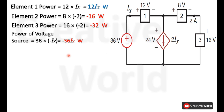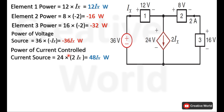Proceed towards the last element, which is the current controlled current source. The power of the current controlled current source is the product of the voltage across it, 24 volts, and the current through it, 2·Ix. In this case the current is taken positive because it is entering from the positive terminal. The power of the current controlled current source will be 48·Ix watts, and this power is being absorbed because of the positive sign.